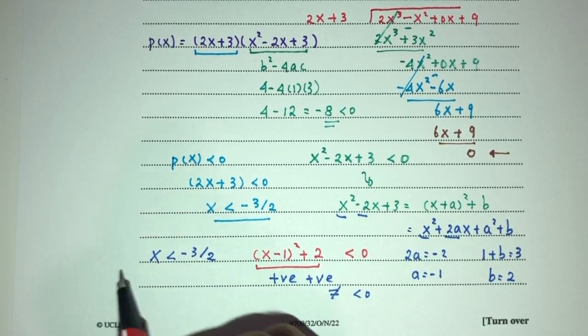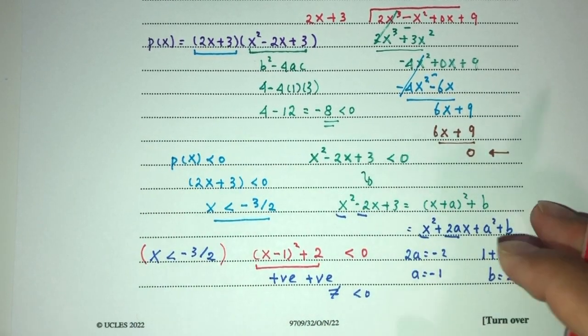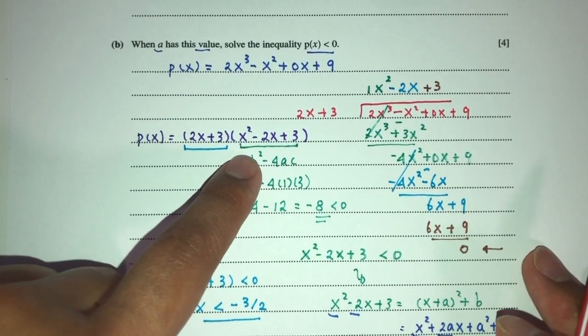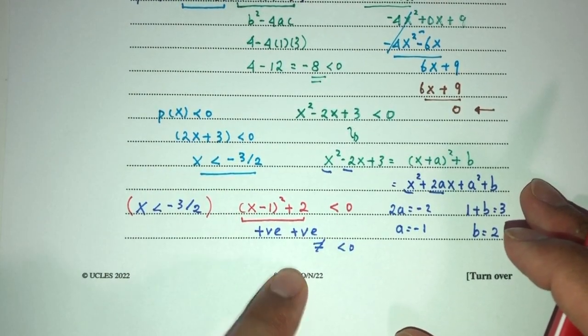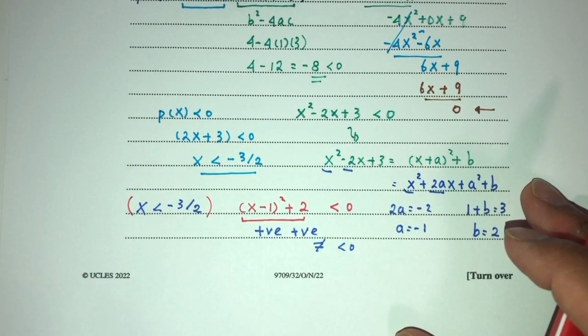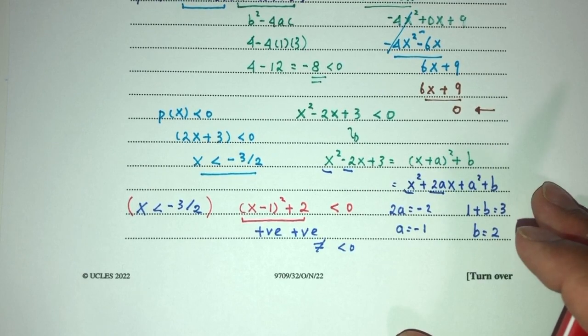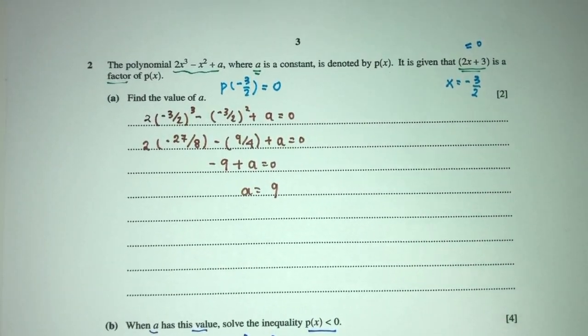So the only answer for part 2 is x less than minus 3 over 2, because the quadratic factor is always positive and will never be less than 0. That is your answer for question 2 part b.